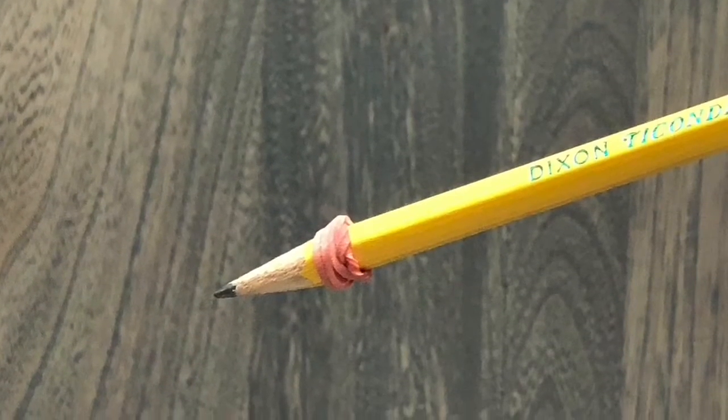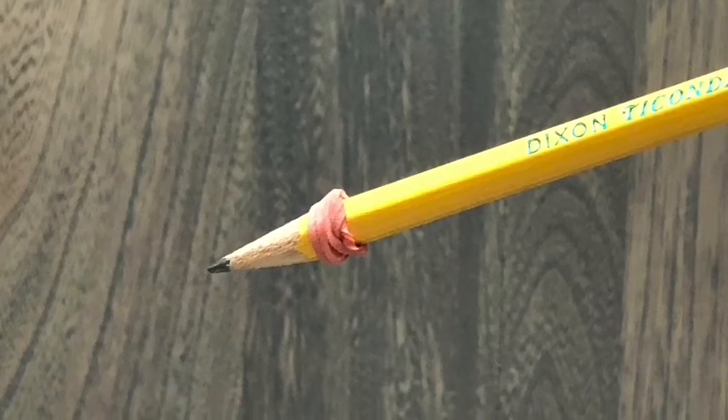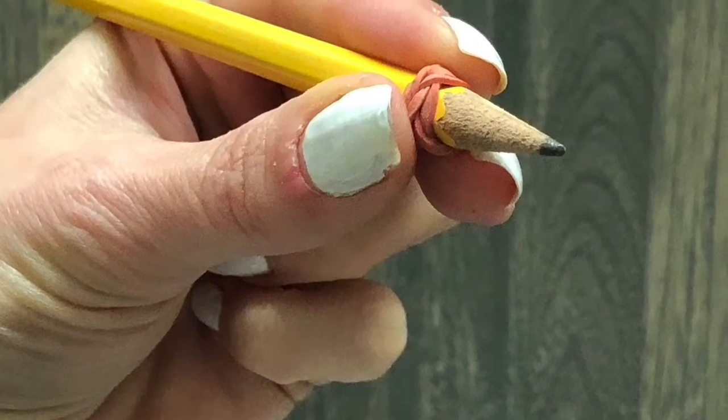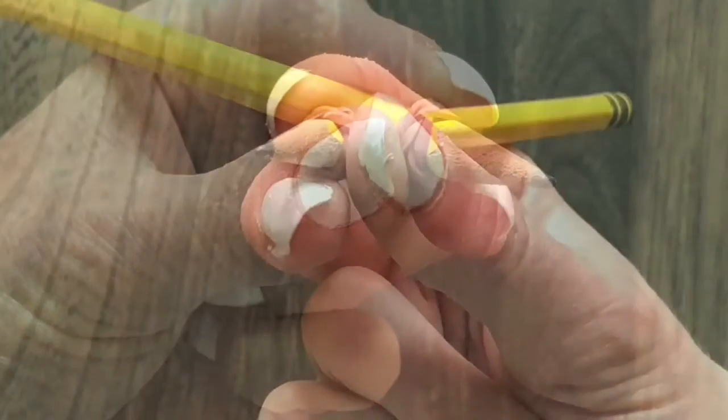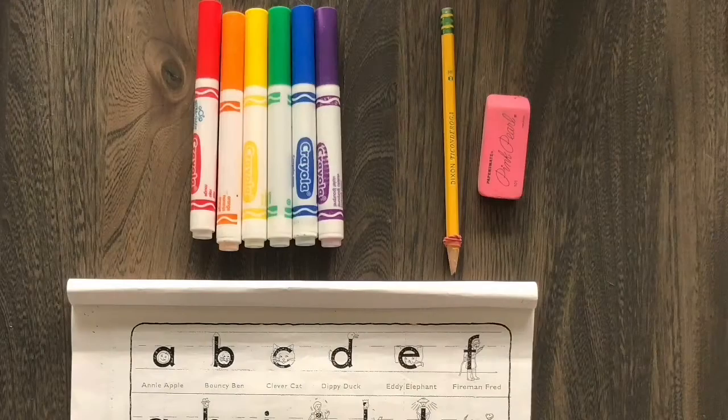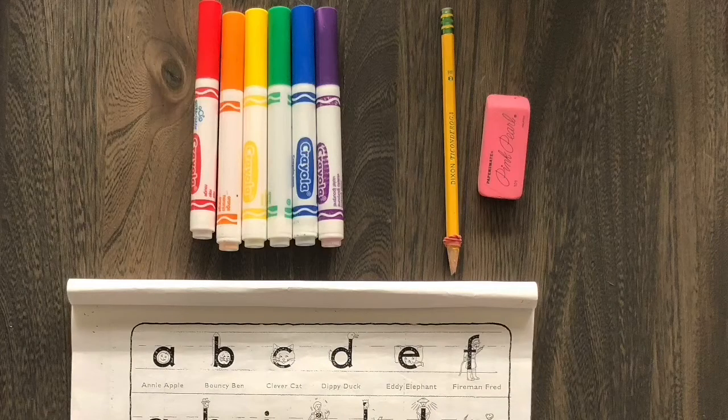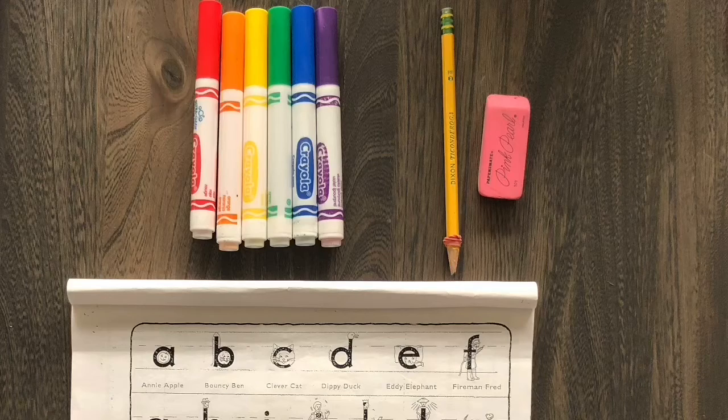On your pencil, it's helpful to have a pencil grip or a rubber band placed down at the bottom so that you can practice putting your fingers in the proper position while we write. Once you have everything set up, you can stand up away from your table or desk because we're going to start by making the letter in the air with our bodies.